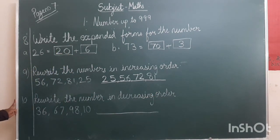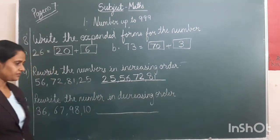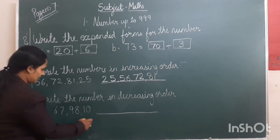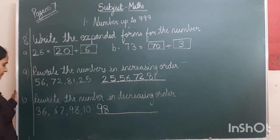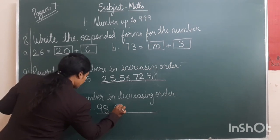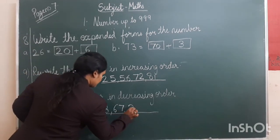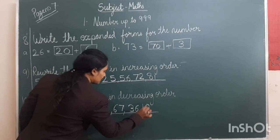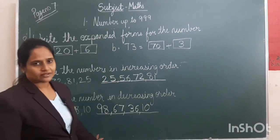Now question number 10: rewrite the numbers in decreasing order. In that we have to first write the biggest number. The numbers are 98, 67, 36, 10 — so in decreasing order: 98, 67, 36, 10. This way you have to write in your test book, page number 7.